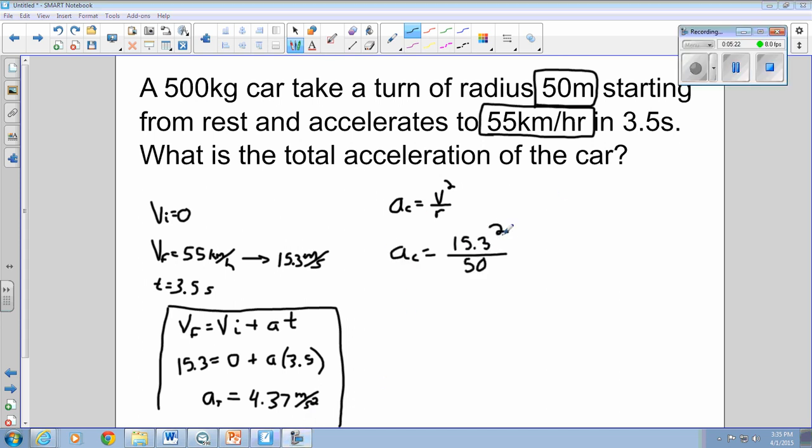So the velocity we're going to use is 55 kilometers per hour, and 55 kilometers per hour is 15.3 meters per second. Square that, divide by 50, and your centripetal acceleration is equal to 4.68 meters per second squared.